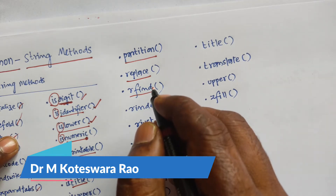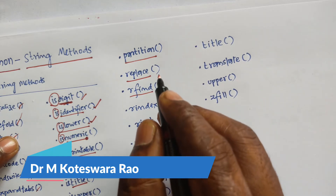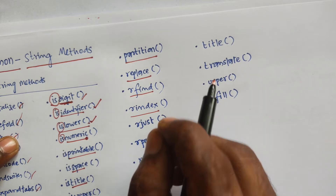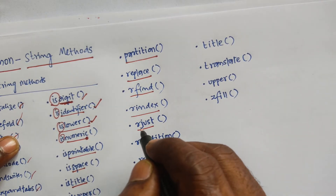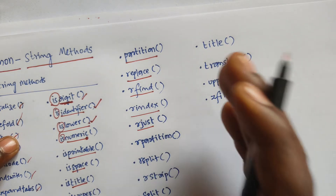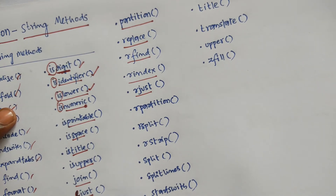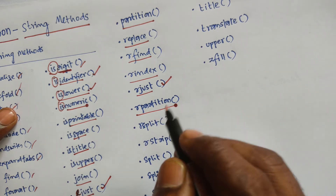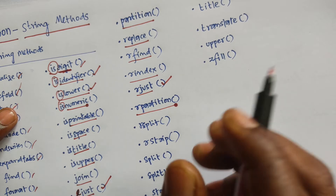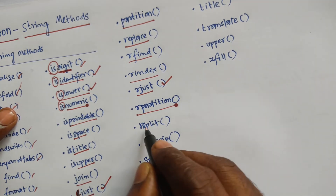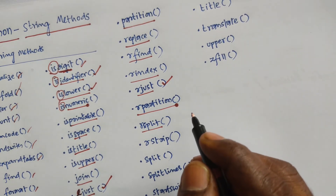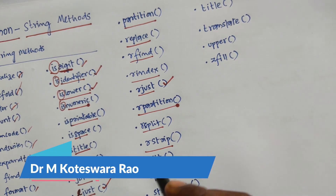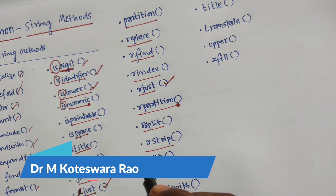Next is rfind, which searches the string for a specified value and returns the last position where it was found. Next is rindex, which similarly searches and returns the last position found. Next is rjust, which returns a right-justified version of the string — previously we had ljust, this one is rjust. Next is rpartition, which returns a tuple where the string is parted into three parts. Then rsplit, which splits the string at the specified separator and returns a list. Rstrip returns a right-trimmed version of the string. Split also splits the string at the specified separator and returns a list.